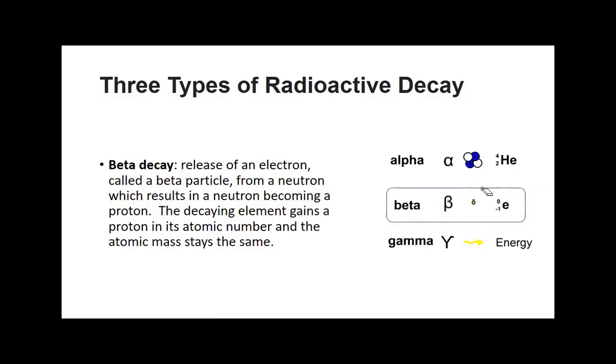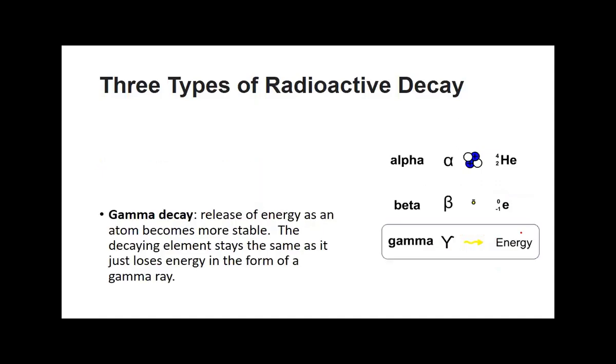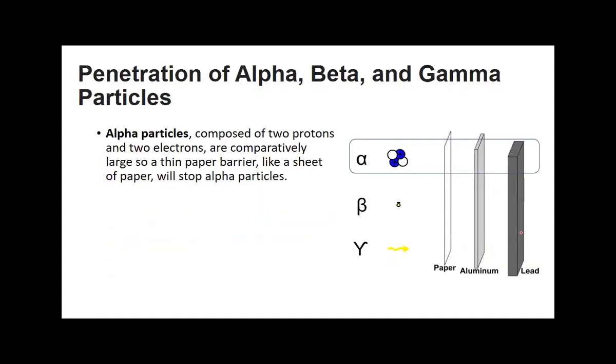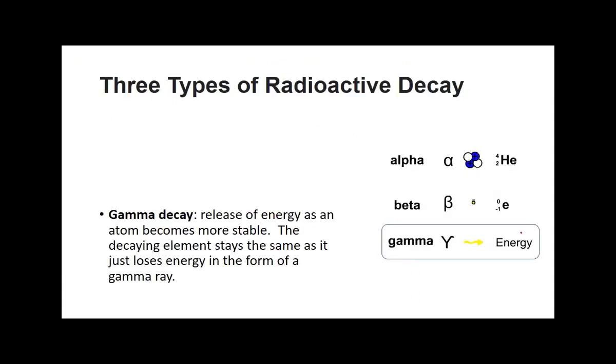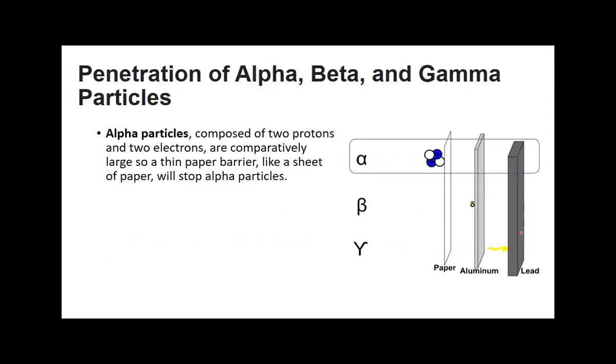Also, you have gamma decay. Gamma decay is just going to be a photon of energy. When you have an atom going to a different energy level, a photon might be given off, a gamma ray might be given off. But the element's not going to change there. That's the gamma decay, or gamma rays being given off. I say gamma particle somewhere, but it should be more like a ray because it's not a particle that's being given off.